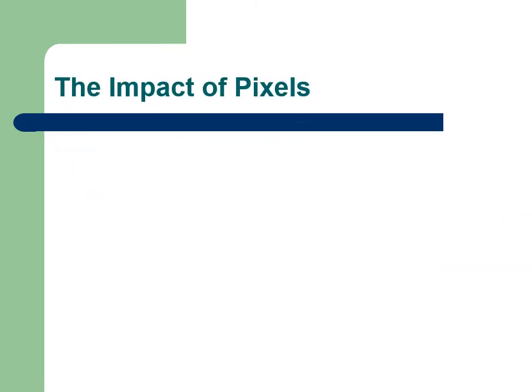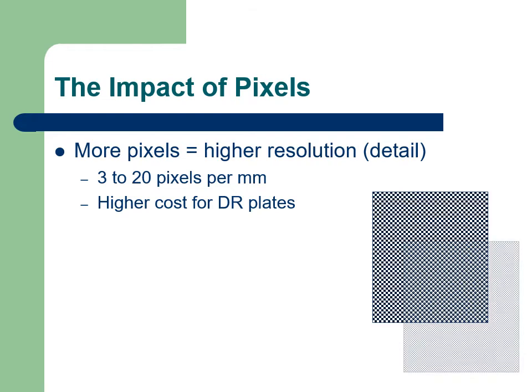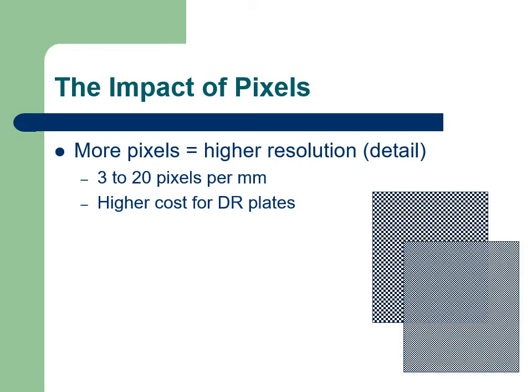What you as a radiographer need to understand is the impact pixel count has on the final image. As pixel count increases, the spatial resolution of the image will increase. Imaging plates tend to vary from 3 pixels per millimeter to about 20 pixels per millimeter, the higher number more commonly used in mammographic imaging. Most radiographic imaging plates average about 6 to 10 pixels per millimeter.